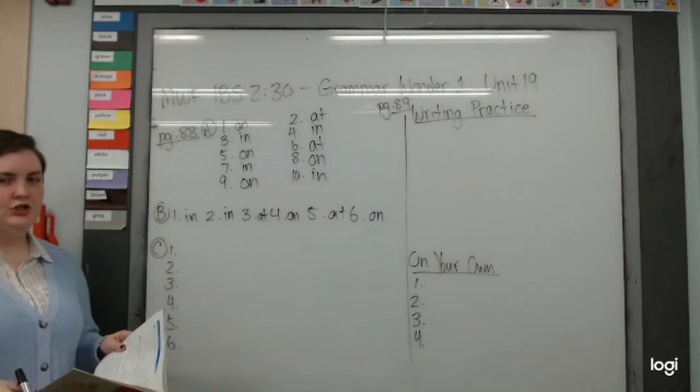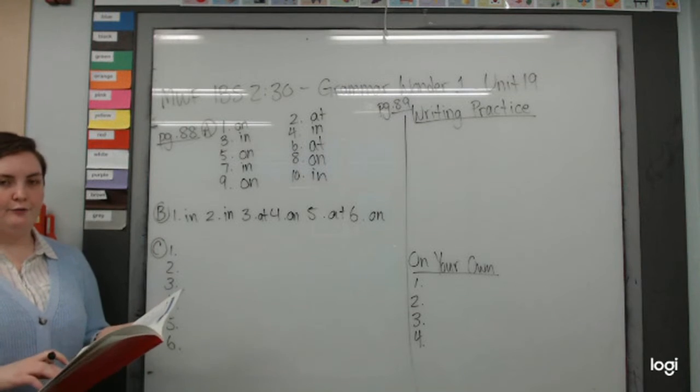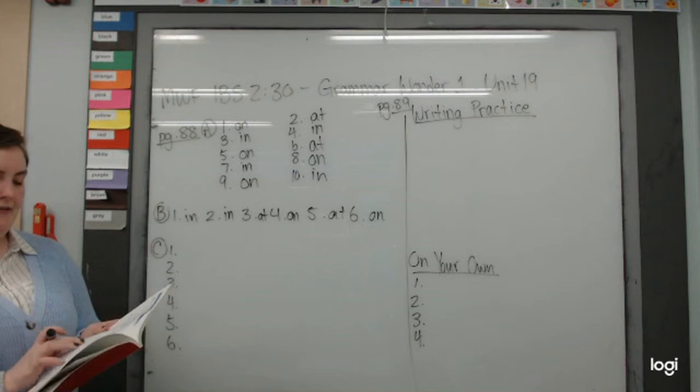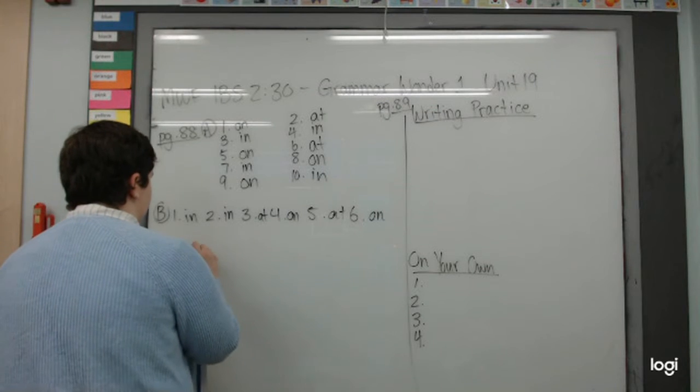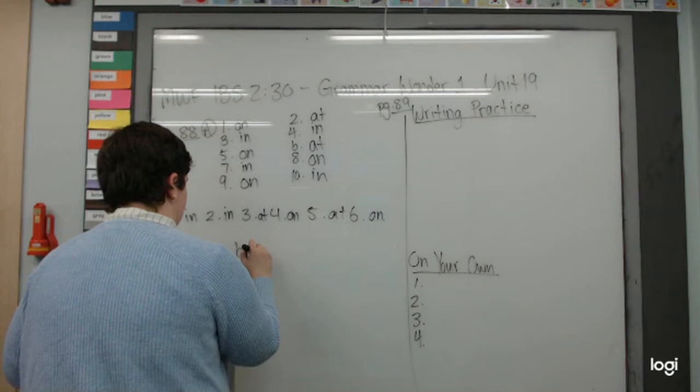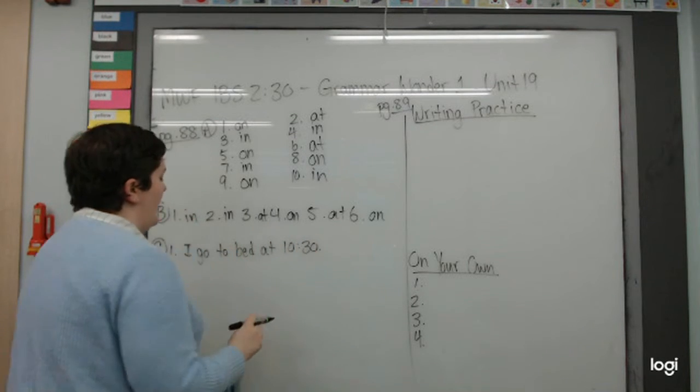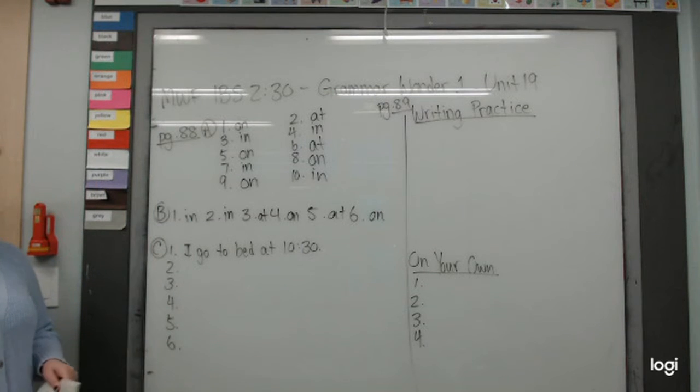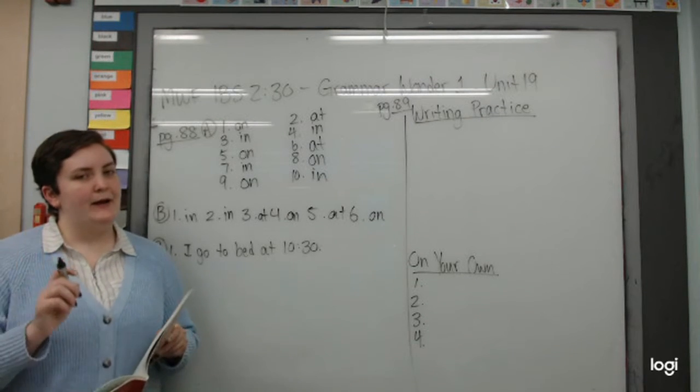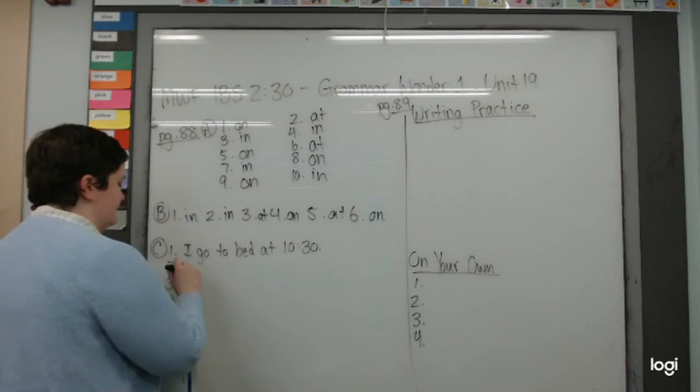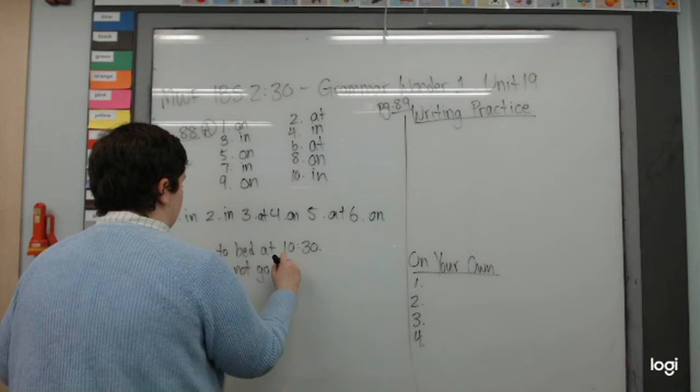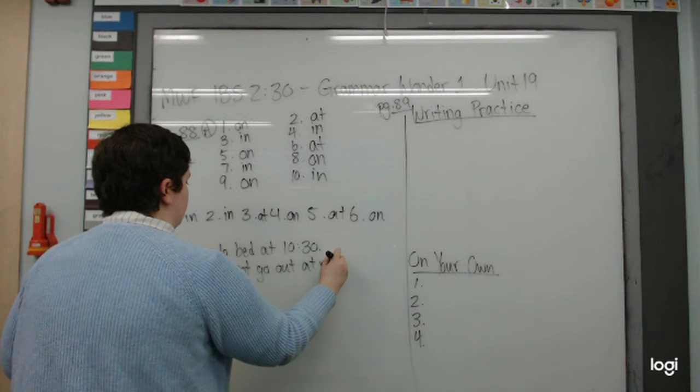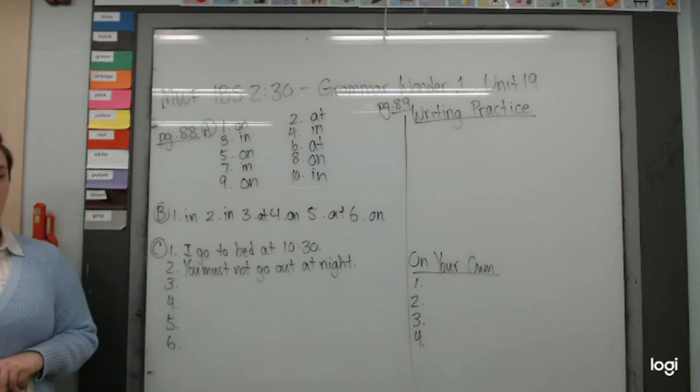And part C, change the underlying word and rewrite. I go to bed on 10:30. 10:30 is time, so we say at. I go to bed at 10:30. Number two, you must not go out in night. Remember, night is special. We always say at night. You must not go out at night.